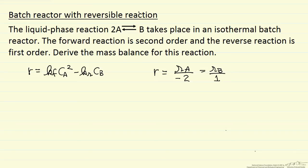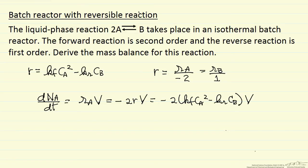If I write a mass balance in terms of the total number of moles of A, how this changes with time in the batch reactor, that's the rate of reaction times the volume. The rate of reaction is minus 2 times R times the volume, so this is minus 2 times K forward, Ca squared, and K reverse, concentration of B times the volume.